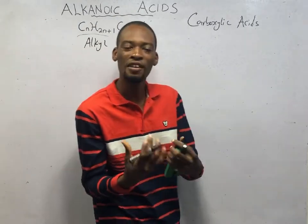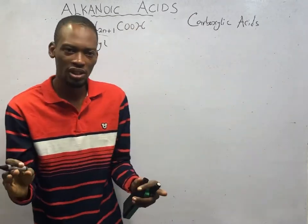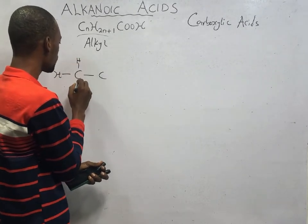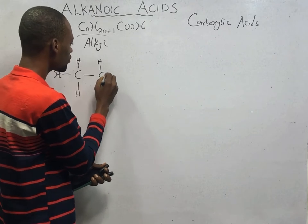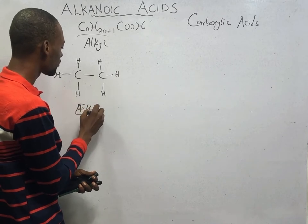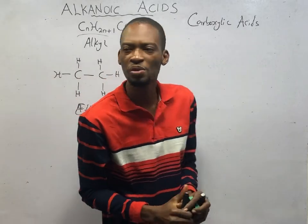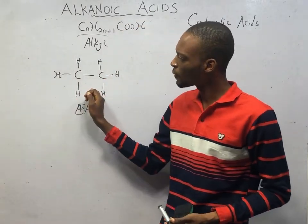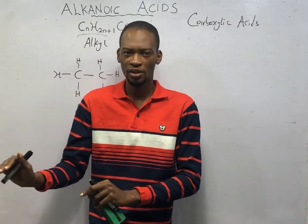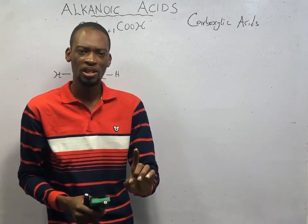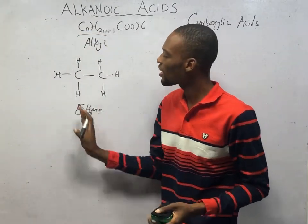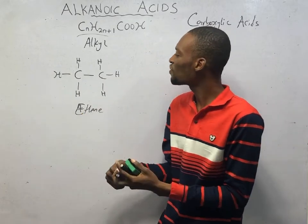The CₙH₂ₙ₊₁ part is simply the alkyl group. Alkyl groups are formed when an alkane loses one hydrogen. For example, C₂H₆ is an alkane. Alkanes contain single carbon-to-carbon and carbon-to-hydrogen bonds throughout — they are hydrocarbons containing just carbon and hydrogen, with no other element.